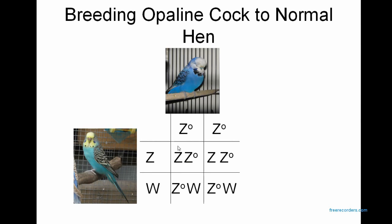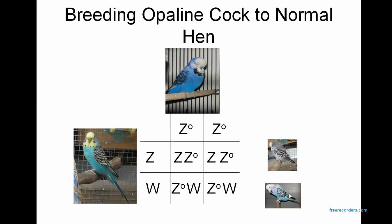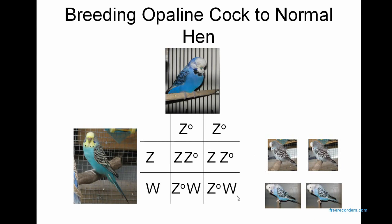If we breed an Opaline cock to a normal hen: each baby will get an Opaline gene from the father and a normal gene from the mother, or they'll get the W. So all hens will be Opaline, and all cocks will be normal split Opaline — they'll appear normal, but you'll know they're carrying the gene. Next, if you breed an Opaline hen to a normal cock: the cock gives a normal Z chromosome to all offspring; the hen gives half the offspring an Opaline Z chromosome and half the W. So all cocks will be split Opaline but appear normal, and all hens will be normal.